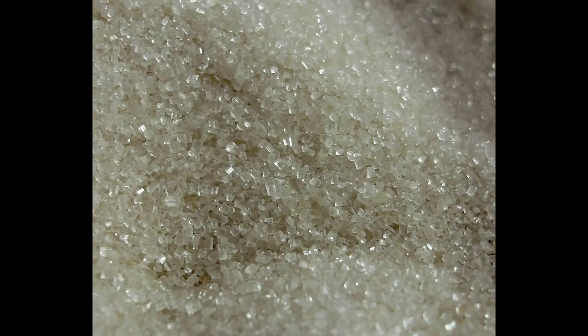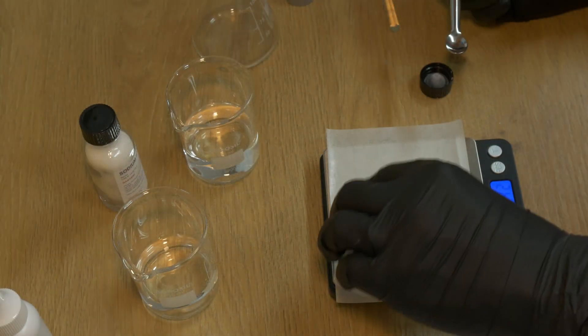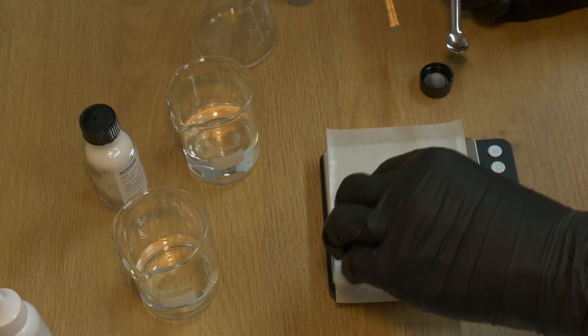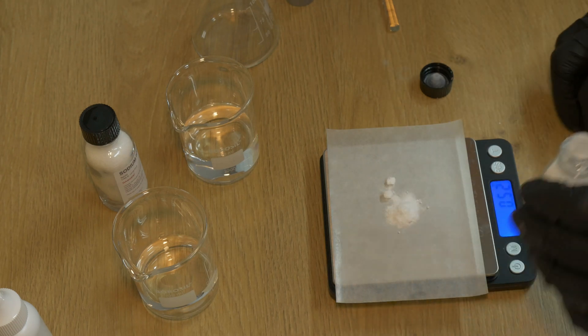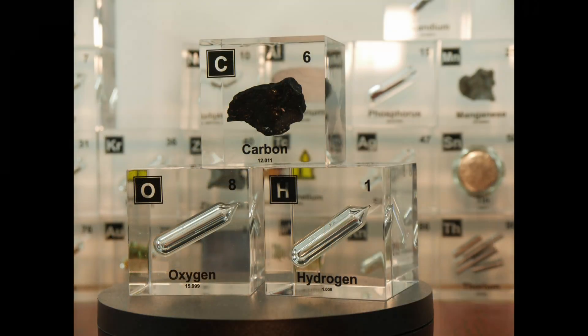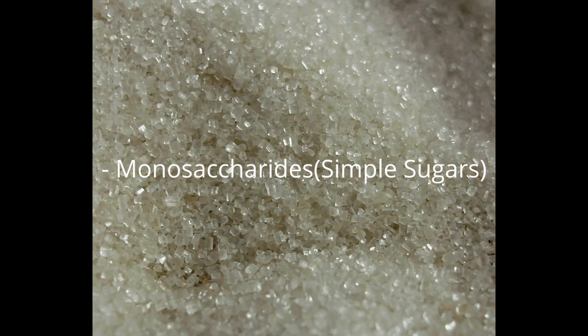Glucose and sucrose are both carbohydrates, but they have distinct structures and chemical properties that affect how they participate in chemical reactions. Now what are carbohydrates? Carbohydrates are a type of food nutrition that give our body energy. They are made up of three elements: carbon, hydrogen, and oxygen.